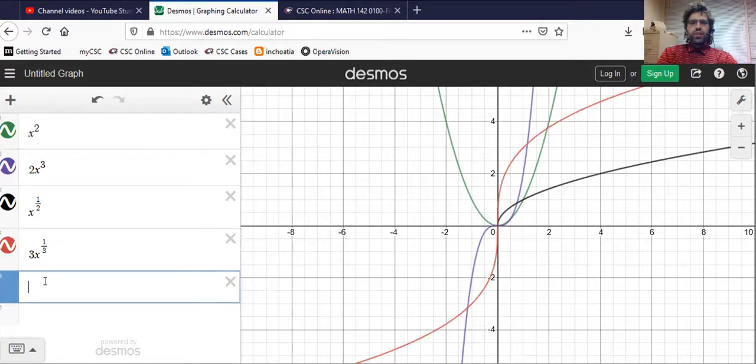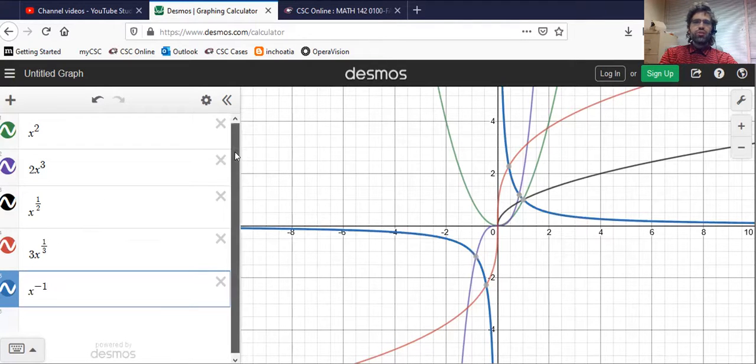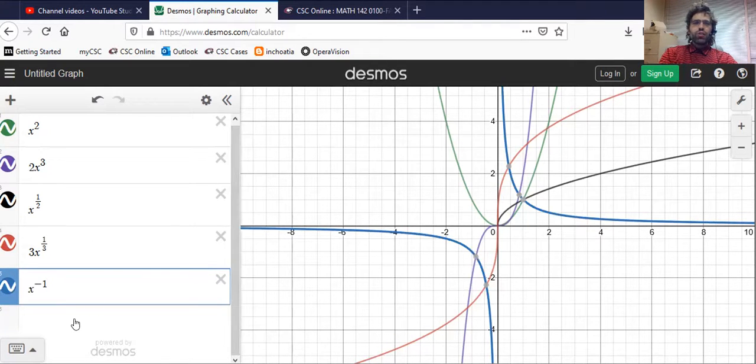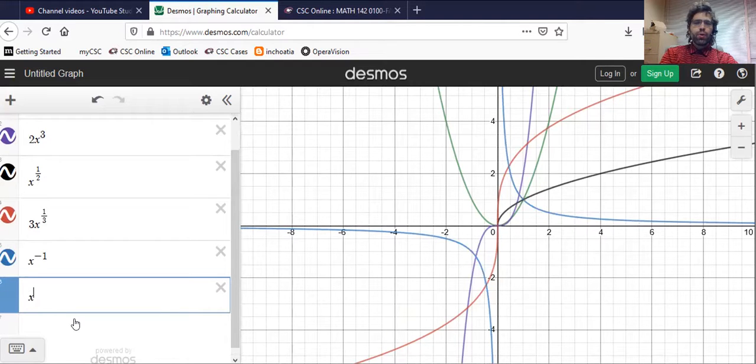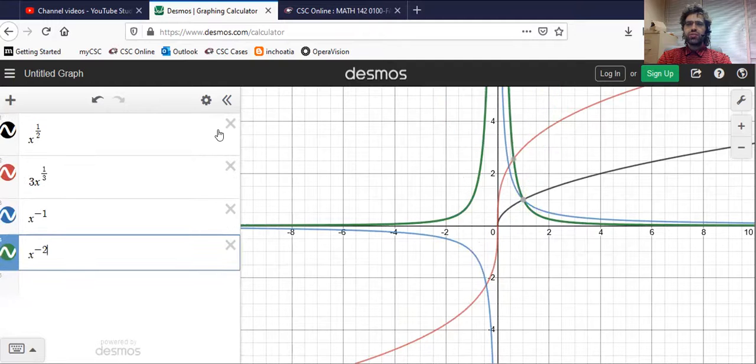The point that I'm trying to make here is that all of these graphs are the graphs of power functions, but they all look very different from one another. And that's why I say that in general, power functions are kind of too complicated to study.